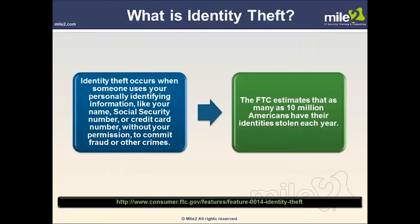So what is identity theft? Identity theft occurs when someone uses personally identifiable information — like your name, social security number, or credit card number — without your permission to commit fraud or other crimes. The FTC estimates that as many as 10 million Americans have their identity stolen each year. You can go to consumerftc.gov to check that out. It's becoming more and more common each year and is very easily done.